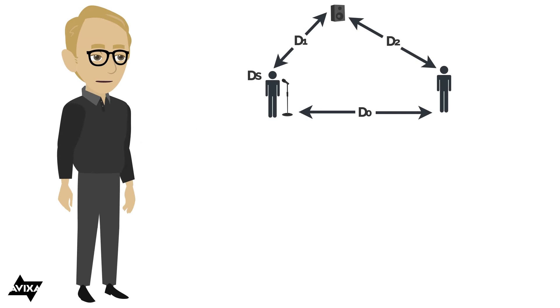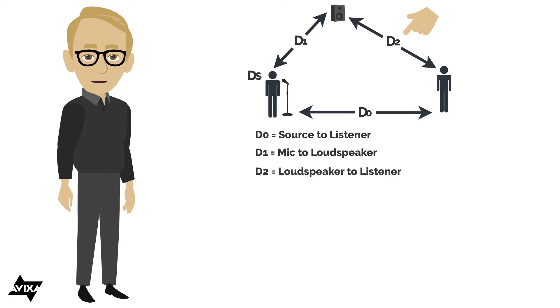So here's an illustration of a sound system. And let's start with D0. D0 is going to be the distance from the source to the listener. D1 is going to be the distance from the microphone to the loudspeaker. D2 is going to be the distance from the loudspeaker to the listener served by that loudspeaker. And then DS is simply the distance from the source to the microphone. And that's just an easy way to remember that S for source, source to microphone.